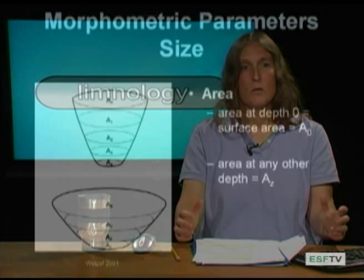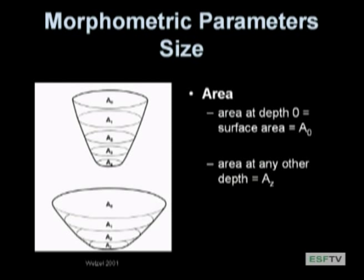Some other size characteristics are harder to measure and require survey techniques. The first is area. We have several possible areas when surveying the lake at different depths. We define the area at the surface as A sub zero, and there's also an area at one meter depth, two meters, three meters. We might want to know this if the water level changes — say in a reservoir or drought. The area at any given depth is A sub z, using this naming convention for each depth.